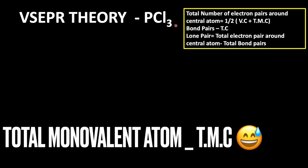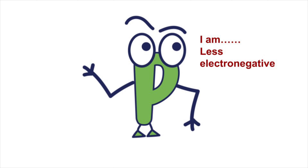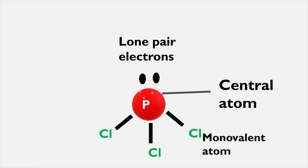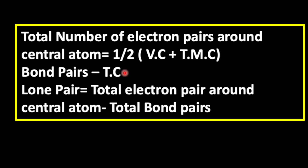In the PCl3 molecule, phosphorus is the central atom because compared to chlorine, phosphorus has a lower electronegativity. Chlorine is the monovalent atom attached to the phosphorus. The bond pair is equal to the total number of atoms attached to the central atom.